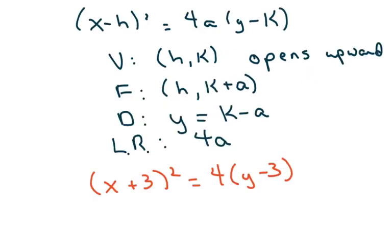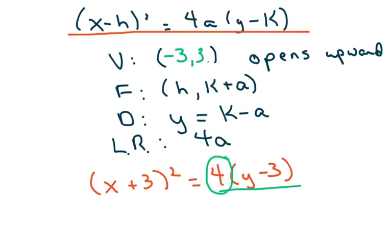So it has this form, which means my h, k is going to be negative 3, 3. So you have negative 3, 3. My focus and directrix and all this is going to be on the y part here. So my a is coming from this, so you set 4 equal to 4a, so a equals 1. So you take your k, which is 3, and 3 plus 1 is 4.